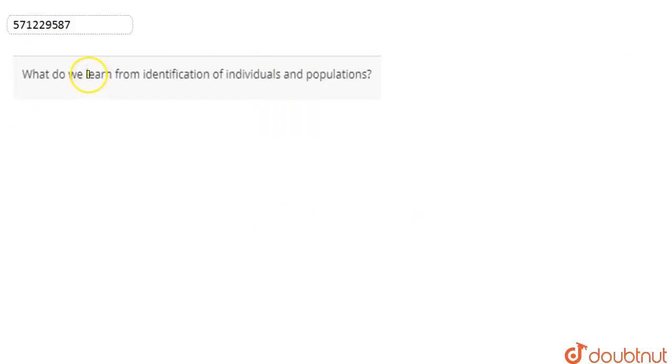If we talk about this question, we are asked what do we learn from identification of individuals and population? So here we have to discuss when do we need identification. Identification is needed when there are a lot of variations or if there is a lot of diversity seen in that particular part or in the surrounding.